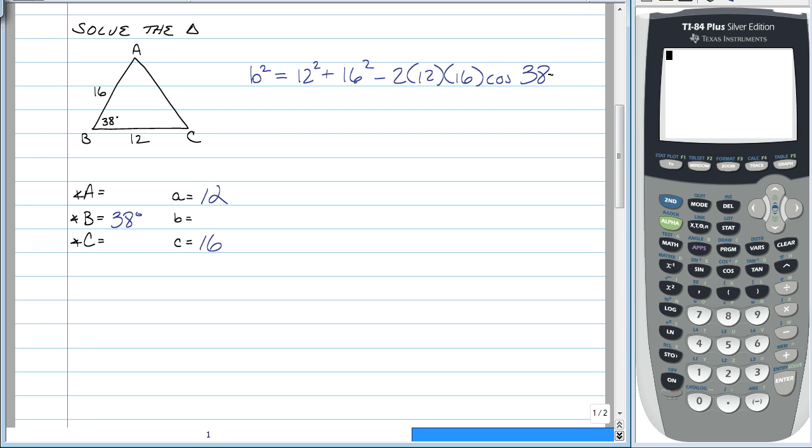Now when you have the variable as your side, that makes using the calculator extremely simple. Because then you can type everything on the right in one swoop. So we have b squared is equal to, and then you just use your calculator. So 12 squared plus 16 squared minus 2 times 12 times 16 times the cosine of 38 degrees. Click enter, and you're going to get 97 point yada, yada, yada.